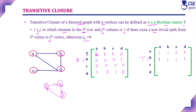For vertex C: there is no direct path from vertex C to any other vertex. C to A, C to B, C to D — all have no path. So all positions in row C are represented as 0.